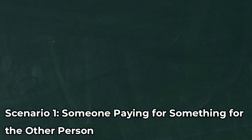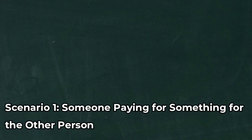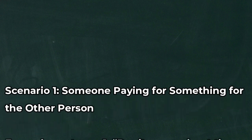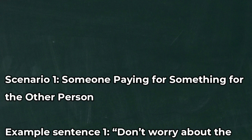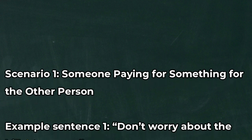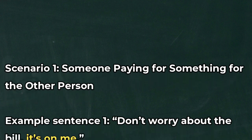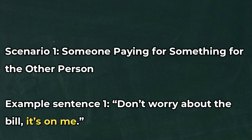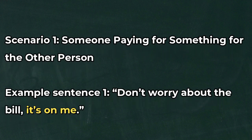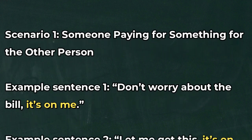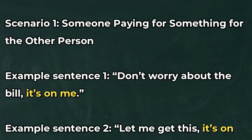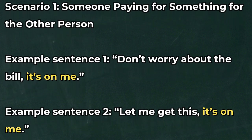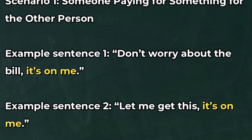Scenario 1: Someone paying for something for the other person. Example sentence 1: 'Don't worry about the bill, it's on me.' Example sentence 2: 'Let me get this, it's on me.'